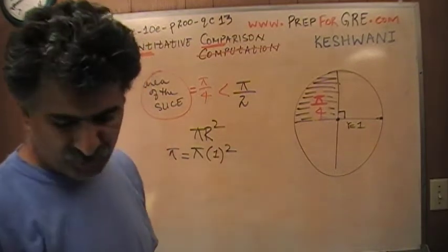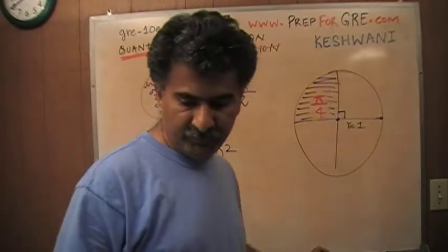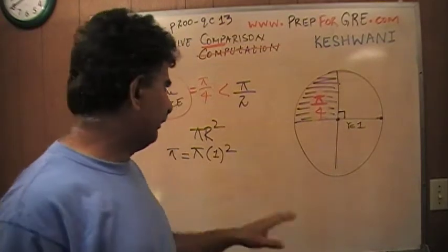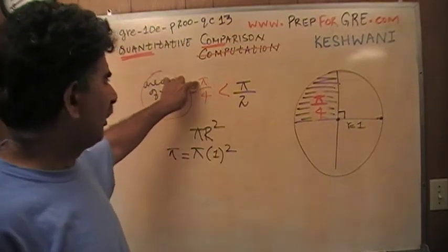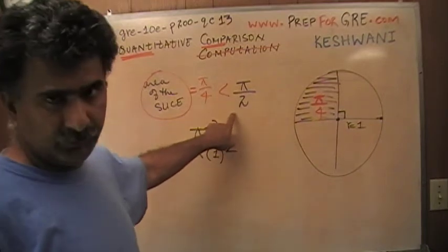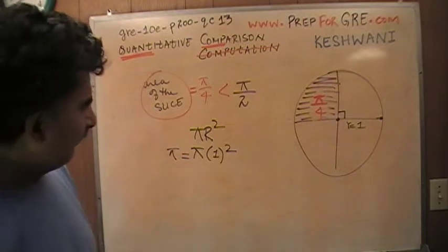You don't have to waste your time figuring out, plugging in the value for π, 3.14 or 22 over 7, whatever it is. It doesn't matter what the value of π is. A quarter of some amount, obviously, is going to be less than half of some amount. Whatever that amount is, it makes no difference. So that's it. We're done. The answer is B.